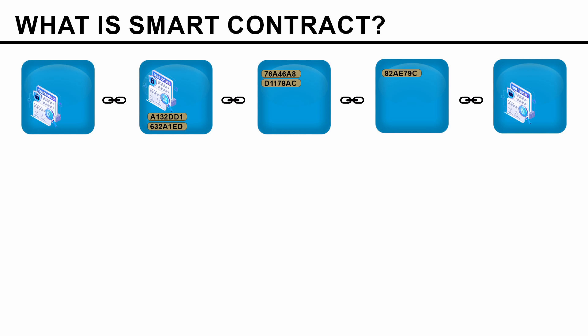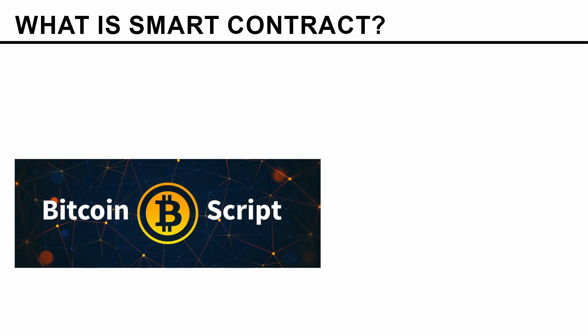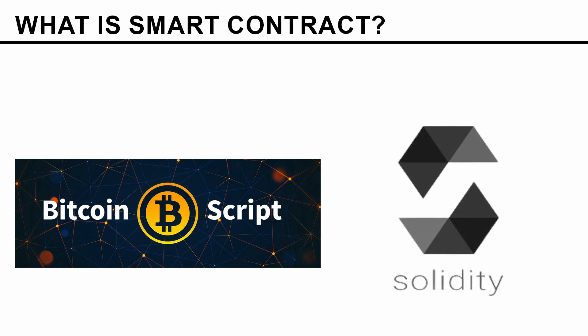Let's start with Bitcoin. In Bitcoin there is a programming language called Bitcoin Script, which actually allows you to code things on the blockchain. At the same time, in Ethereum there is a programming language called Solidity, and it allows you to code for Ethereum. For this tutorial, the difference between these two programming languages will be an important component of our discussion.